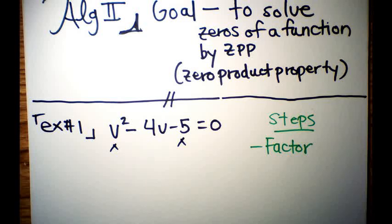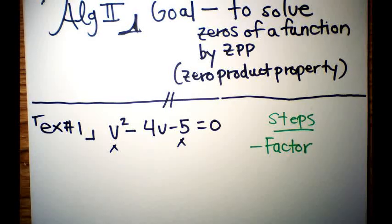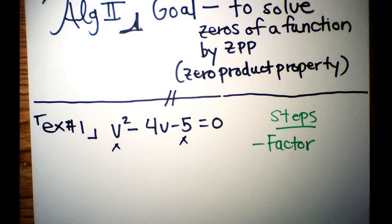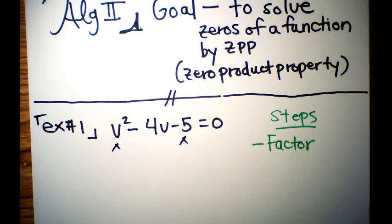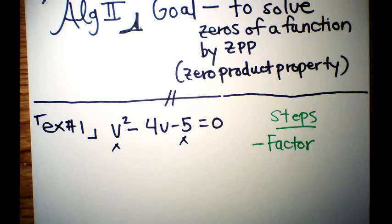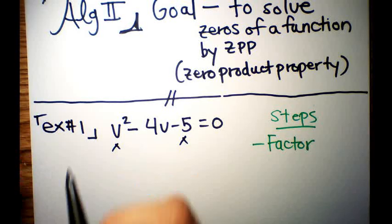Feel free to use the pause button if I'm going too fast. Here's example number one: v² - 4v - 5 = 0. Your first step is to factor. It is already assumed that you know how to factor — there are a couple of ways, but let's do it quickly.